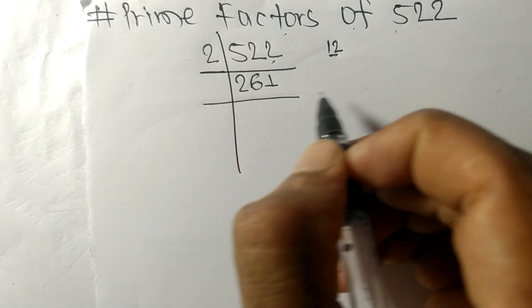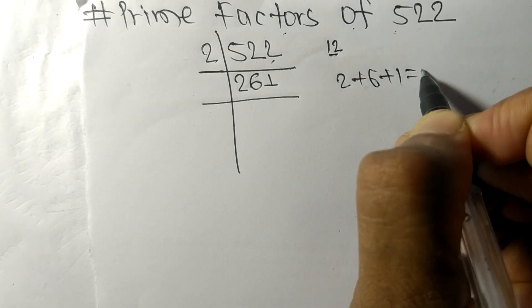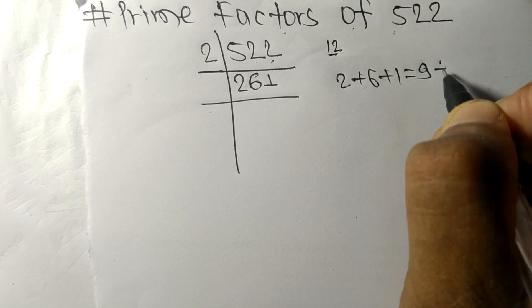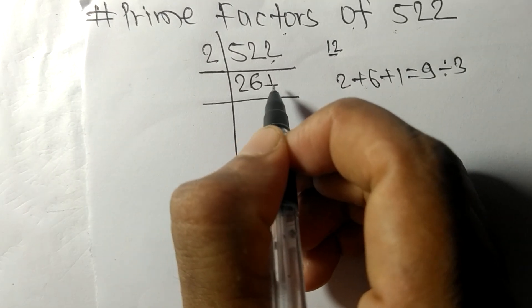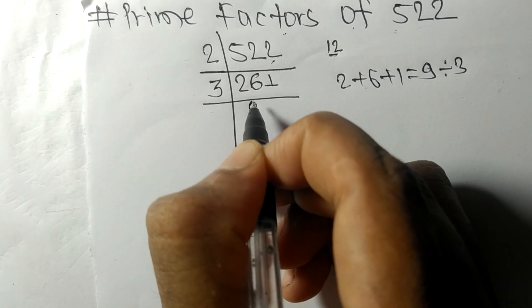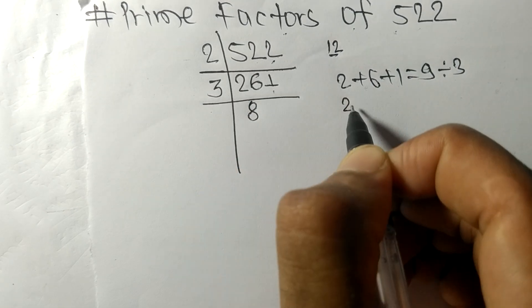When we add all these numbers, that is 2 plus 6 plus 1, then we get 9, and 9 is exactly divisible by 3. So 261 is also divisible by 3. 3 times 8 means 24, remainder 2.